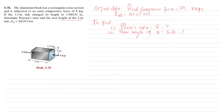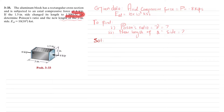Starting the solution: due to this compressive force, the length will decrease, but the height and width will increase. The increase in the 1.5-inch side is given as 1.500132 inches. We know that Poisson's ratio equals minus the lateral strain divided by the longitudinal strain.